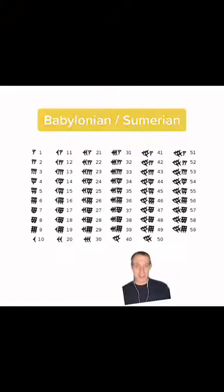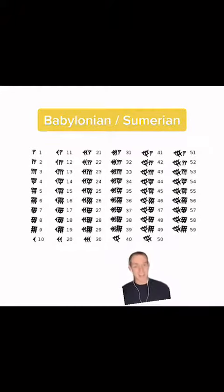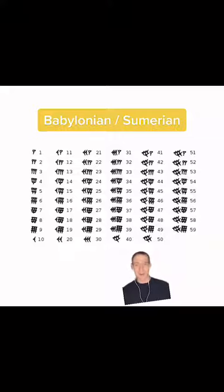The Babylonians used a combination of a base 10 and a base 60 counting system, which is why there are 60 minutes in an hour, because we got our system of timekeeping from them.